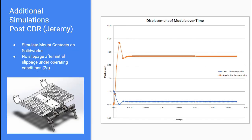We also conducted tests to simulate the mount contacts on SOLIDWORKS, showing that in our operating conditions of 2G, there is no slippage of the grips after initial adjustments. This shows that our mounts are strong enough to transfer the thrust from the module onto the stretcher in both the vertical and horizontal directions based on our operating conditions.